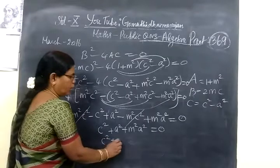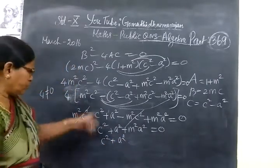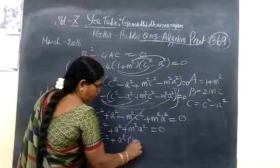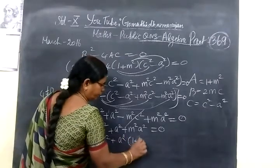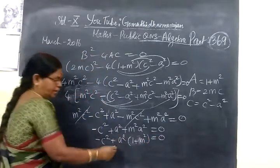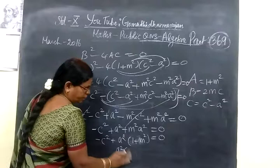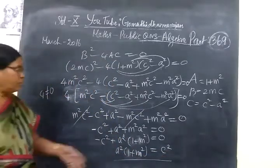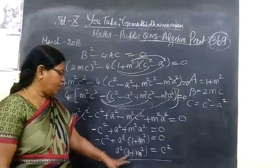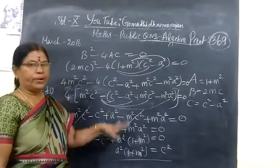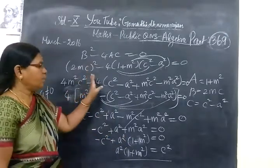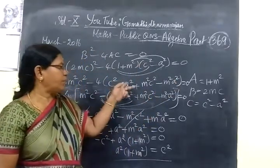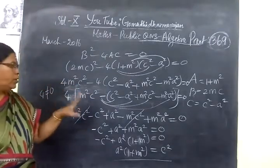Now we take a² as common. So a²(1+m²) minus c² equals 0, which gives a²(1+m²) equals c². This is exactly what we wanted to prove. The key point is discriminant equal to 0, that is b²-4ac = 0, and substituting the correct a, b, c values.